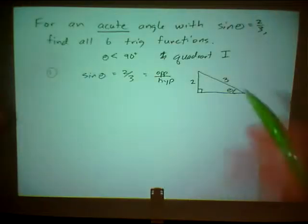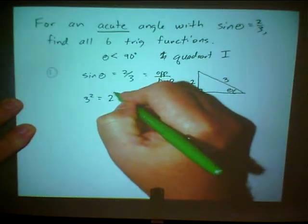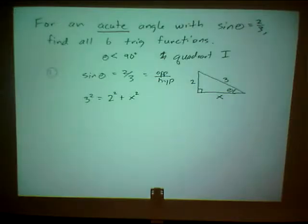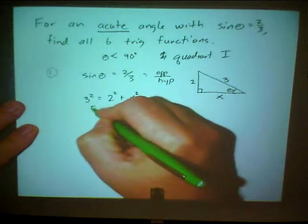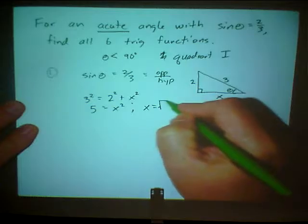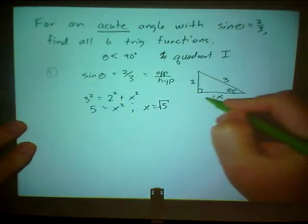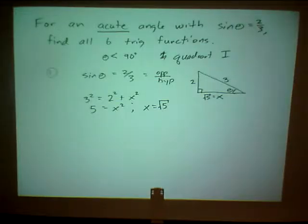The Pythagorean formula says hypotenuse squared equals one leg squared plus the other leg squared. So: 9 = x² + 4, which gives us x² = 5, and taking the square root of both sides, x equals the square root of five. So the third side of my triangle is square root of five. Now that I have all three sides of the triangle, I can simply go through and find all my trig functions, and because I'm in the first quadrant I know they're all positive.